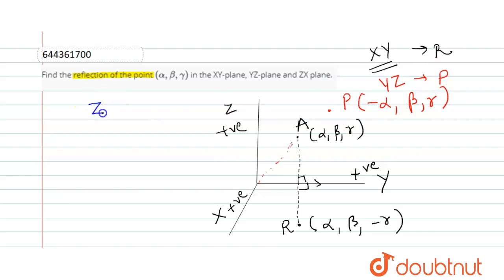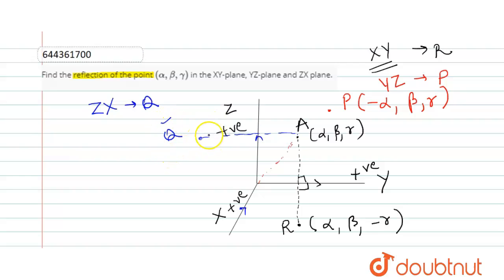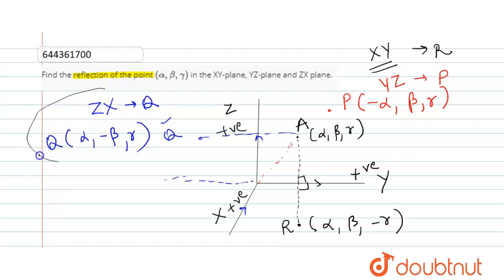Finally, for the reflection of point A in the ZX plane, call it Q. This is the ZX plane. The image will be at an equal perpendicular distance on the other side. In that region, the Y coordinate becomes negative. So the coordinates of Q are alpha, minus beta, gamma.